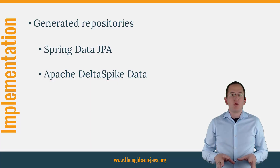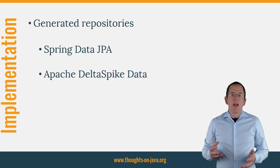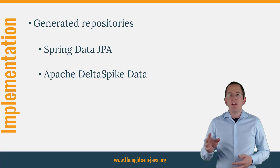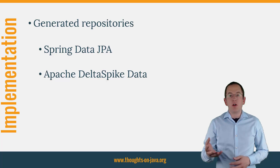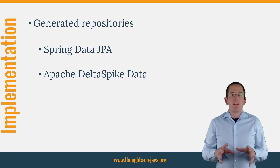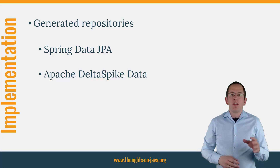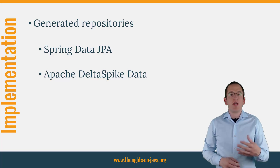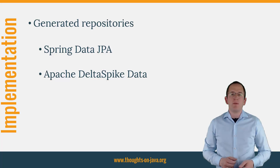But the interface abstraction also enables frameworks to generate huge parts of the required code. In most enterprise projects, you only need to define the repository interface. Spring Data JPA and Apache DataNucleus can generate standard repository implementations for you. You just need to provide your own implementation if your implementation gets especially complex. I will show you more of that in some of my next videos. But for now, let's implement the repository pattern without any framework. That makes the pattern easier to understand and highlights the benefits of frameworks that generate repetitive parts of the implementation.